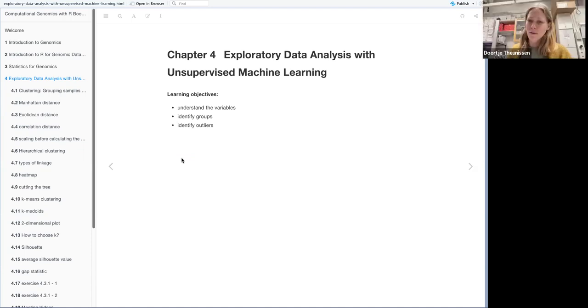So for chapter four, it's about exploratory data analysis with unsupervised machine learning. The objectives of this chapter are to understand the variables that you have in your dataset and to identify groups and identify outliers. And then we have two main parts, one part about clustering and then one part about dimensionality reduction.